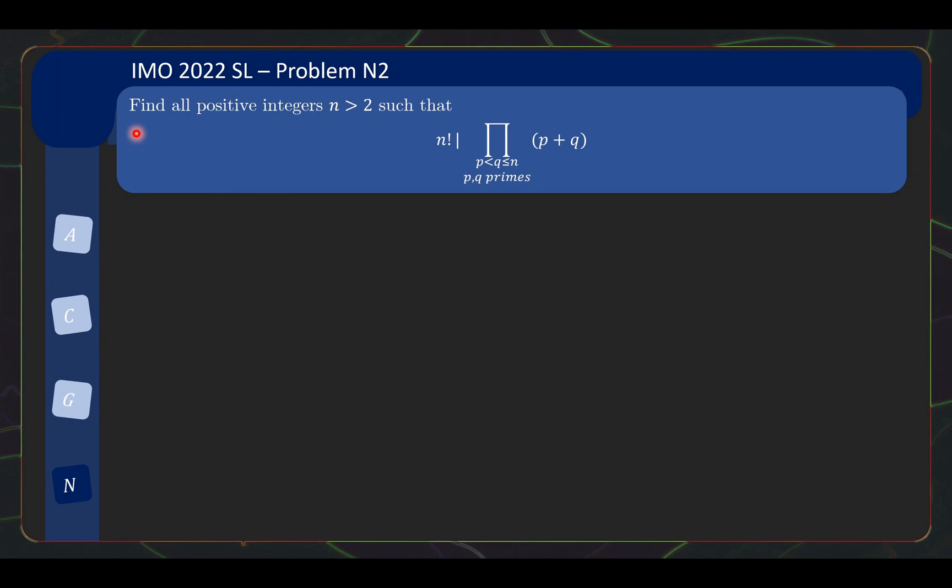For N2, we are supposed to find all positive integers n > 2 such that n! divides this complicated looking product on the right. This product sums over all p < q ≤ n where p, q are primes, and then we put p + q into the factor. To give an example, if n equals 8, all the primes less than or equal to 8 are 2, 3, 5, and 7. If we list all possible outcomes, we take the product of these six terms.